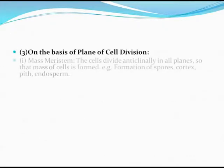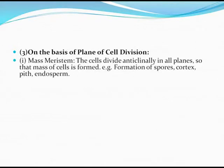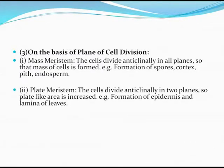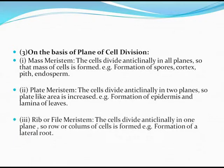Meristems have also been divided on the basis of plane of cell division. Mass meristem: cells divide anticlinally in all planes so that a mass of cells is formed; examples include formation of spores, cortex, pith, and endosperm. Plate meristem: cells divide anticlinally in two planes so a plate-like area is increased; example is formation of epidermis. Procans: cells divide anticlinally in one plane so rows or columns of cells are formed; example is formation of a lateral root.